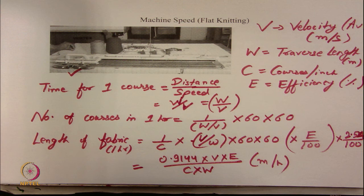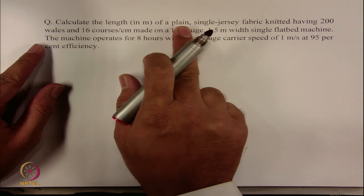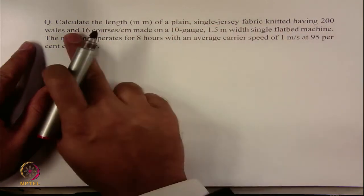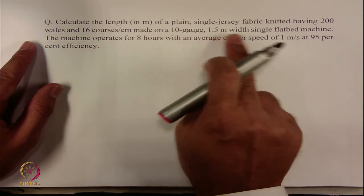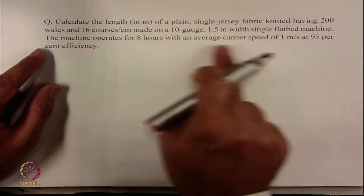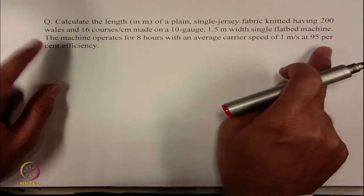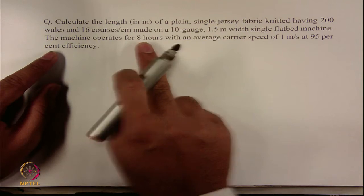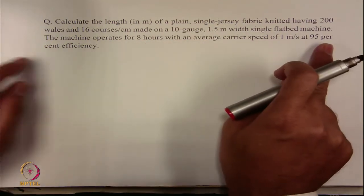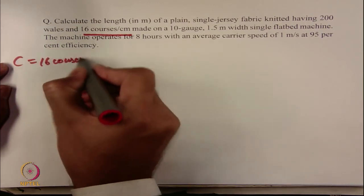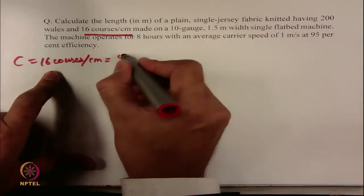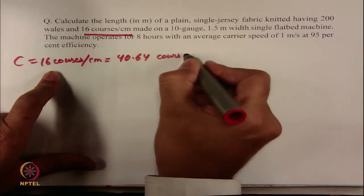Let's work through a simple example. Calculate the length of a plain single jersey fabric knitted with 200 wales and 16 courses per centimeter, made on a 10 gauge, 1.5 meter width single flatbed machine. The machine operates for 8 hours with an average carrier speed of 1 meter per second at 95% efficiency. So: velocity V = 1 m/s, efficiency E = 95%. The 16 courses per centimeter converts to 40.64 courses per inch (C = 40.64).